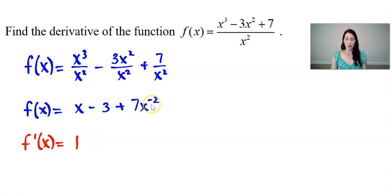And then here to use the power rule, going to multiply 7 times negative 2 to get a negative 14 x to the power of drop 1 from the exponent to get negative 3.